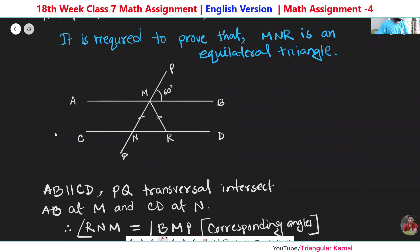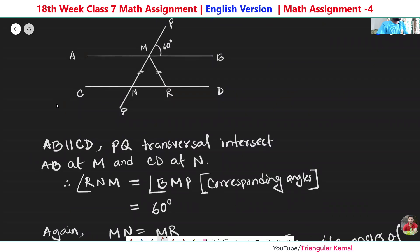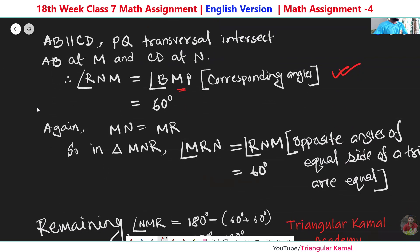Now using the triangle we will answer the question. Step one: AB and CD are parallel lines, so angle RNM equals angle BMP because they are corresponding angles. Since angle BMP is given as 60 degrees, angle RNM will also be 60 degrees. Step one is done.